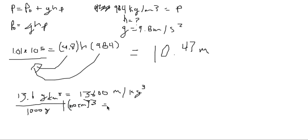13.6 divided by 1000 times 100 cubed equals 13,600 kg/m³. Now we can use this density value and plug it back into the equation.